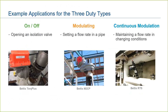Let's look at a few practical examples of where you might see these service ratings. For on-off service, we have an example of the Bettis Torque Plus on a dump valve. In this case, the tank is filling up maybe every few days, and once the fluid level trips a float switch, the actuator opens the valve, dumping off the liquid. The actuator then closes the valve, and the cycle repeats a few days later.